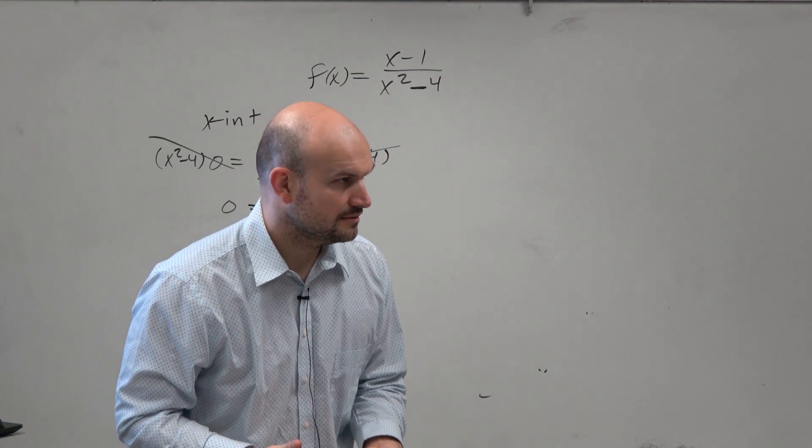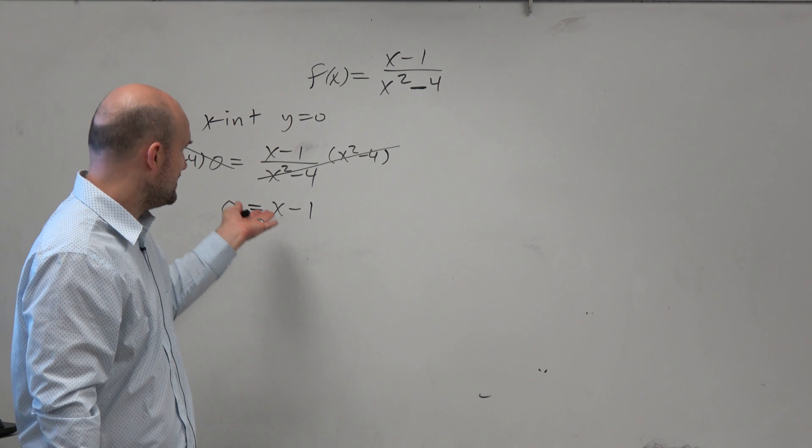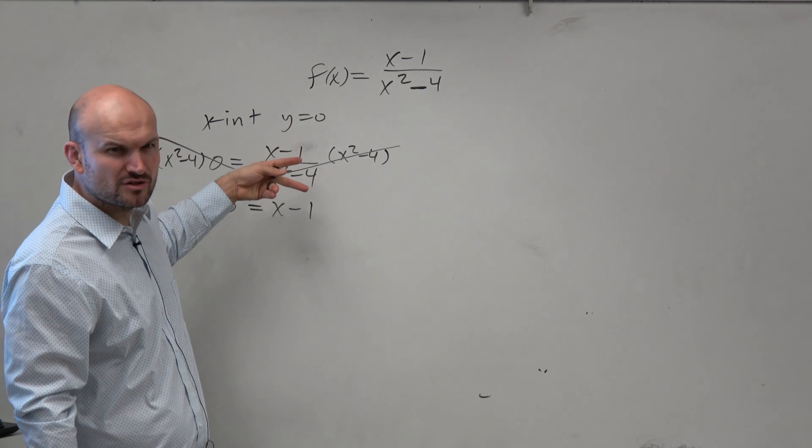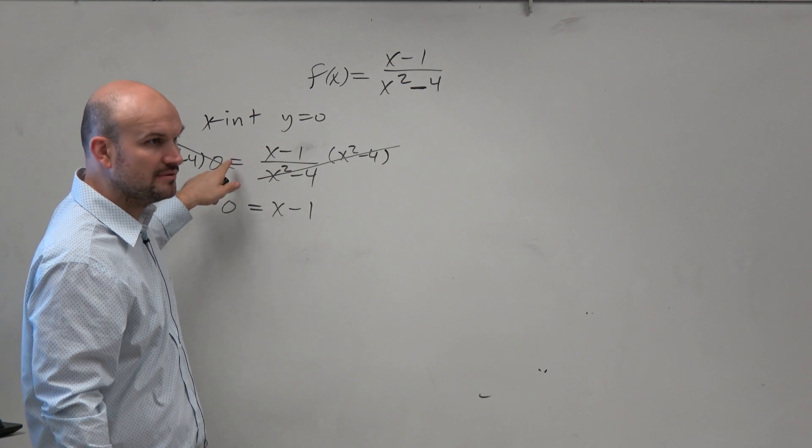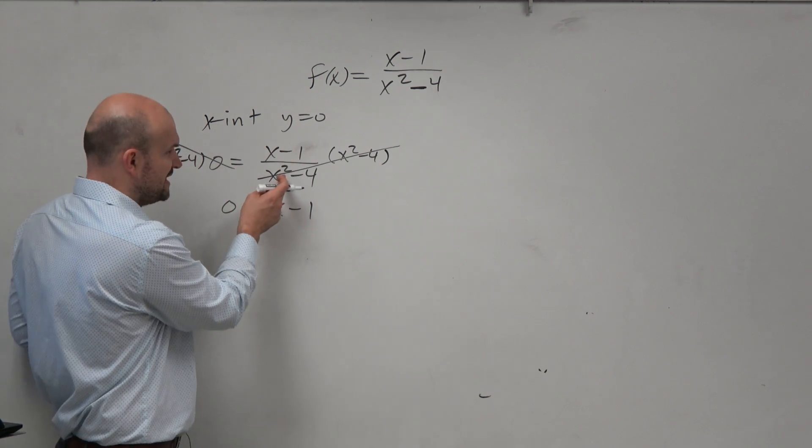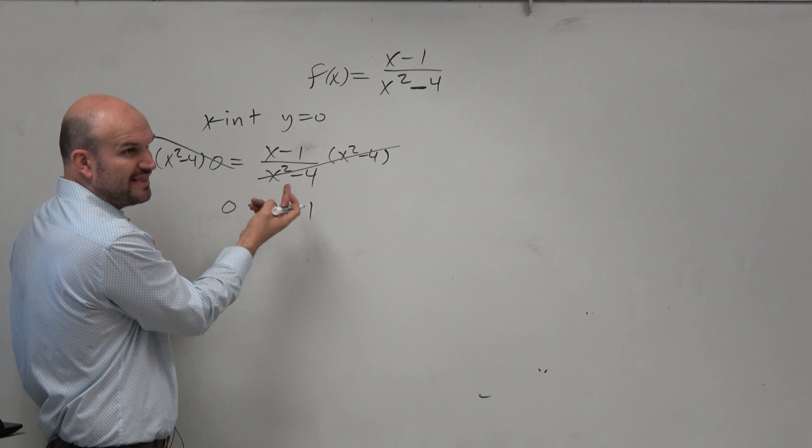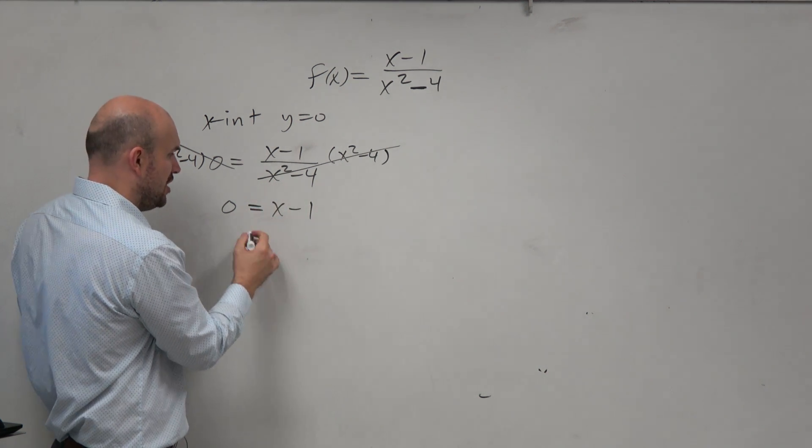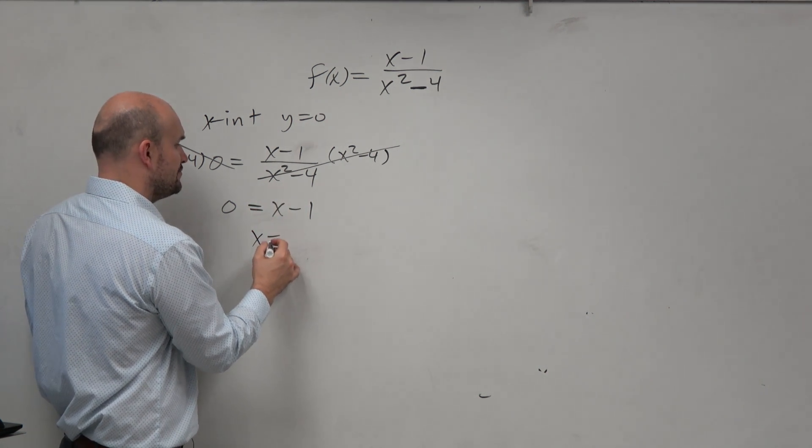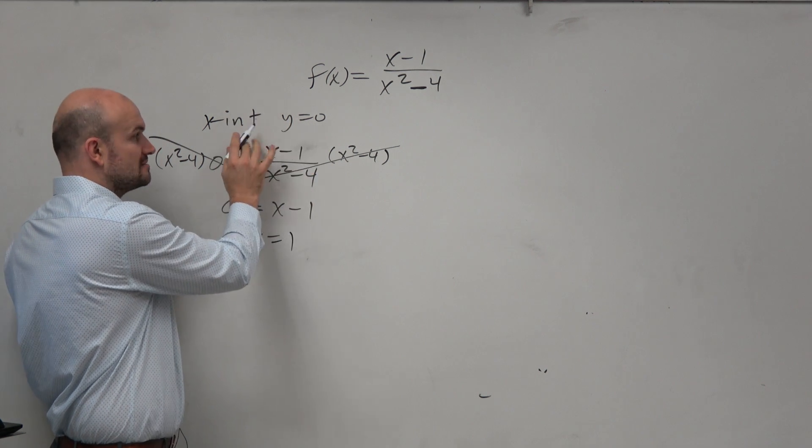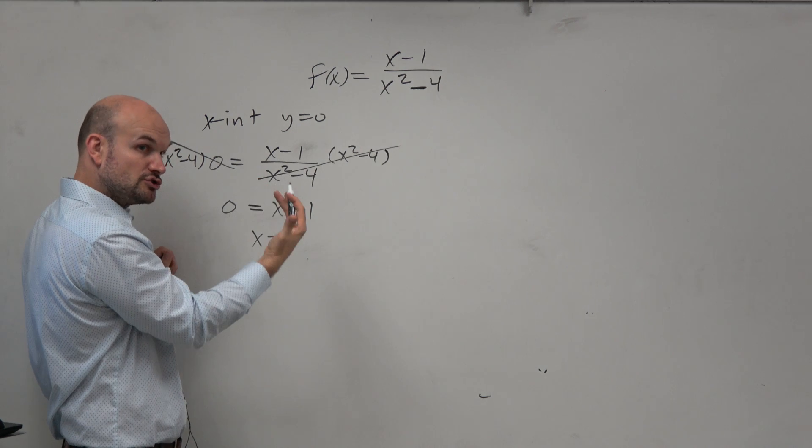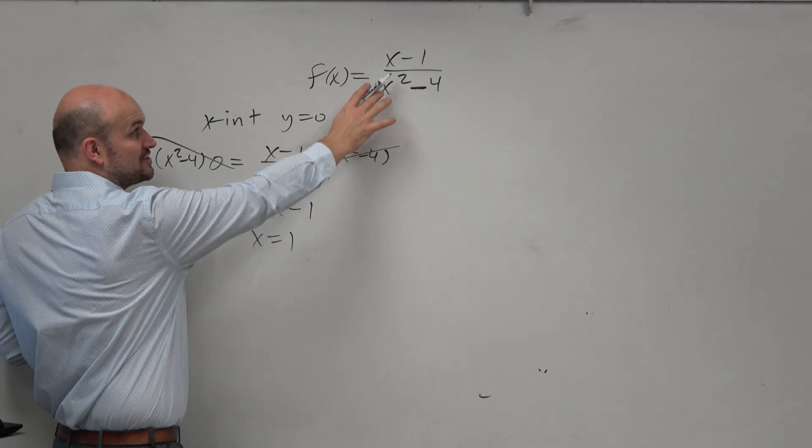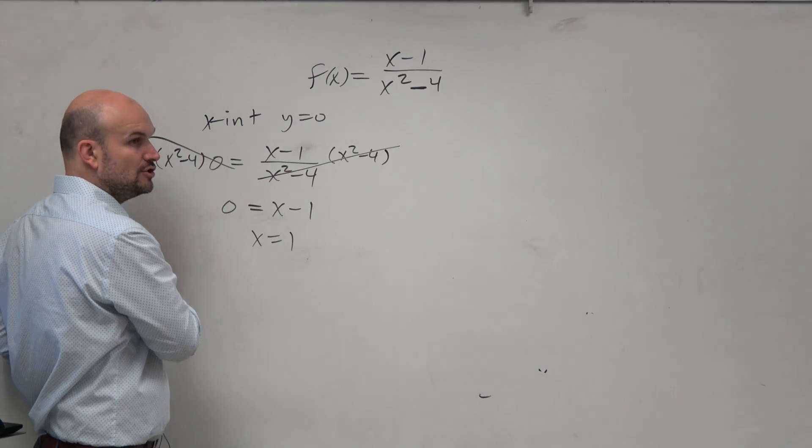Quick little trick here is, if we have a rational function, is it always just going to be the numerator equal to 0? Does it really matter? Could this have been like x to the 22nd power? Would that have made a difference? No. So there's nothing wrong with remembering the process. X-intercept y equals 0, because you should know that. But if you guys want a little trick for a rational function when it's in that form, just set the numerator equal to 0.